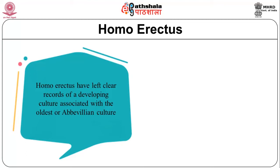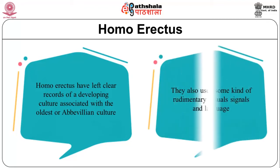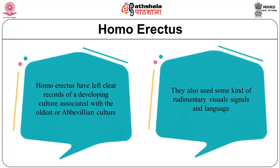Homo erectus people were nomads who roamed widely in small groups or extended families. They had begun to clothe themselves with animal skins and many moved into caves to protect themselves from adverse cold conditions. They also used some kind of rudimentary visual signals and language.